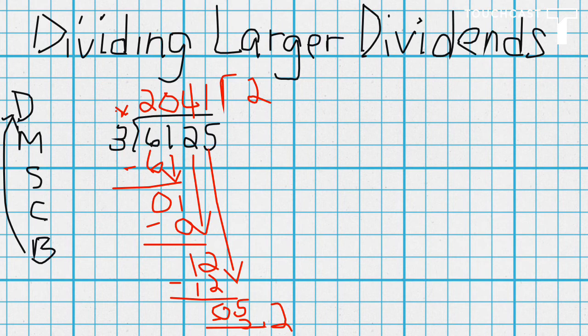Now, the check, we said we're going to take our quotient, which is 2,041. And we multiply that by our divisor, which is 3.